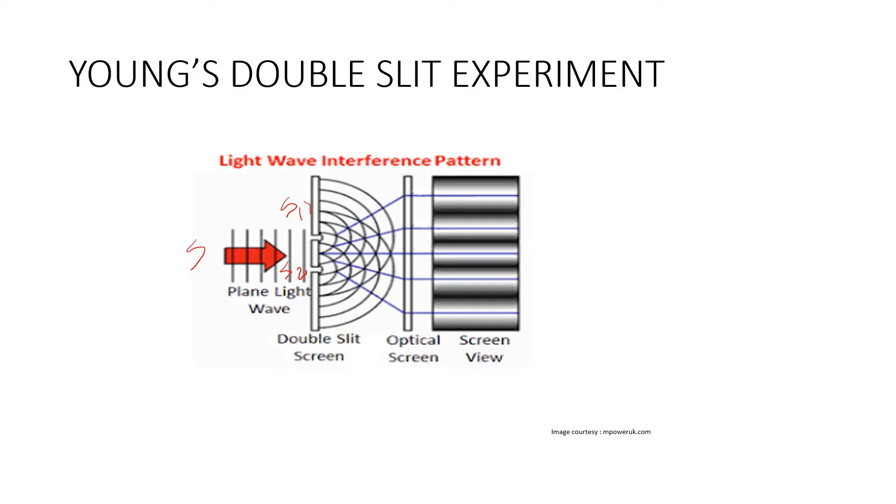S is equidistant from S1 and S2. S1 and S2 behave as two coherent sources as both are derived from S. In physics, two wave sources are perfectly coherent if their frequency and waveform are identical and their phase difference is constant. Laser light is an example of coherent source of light.